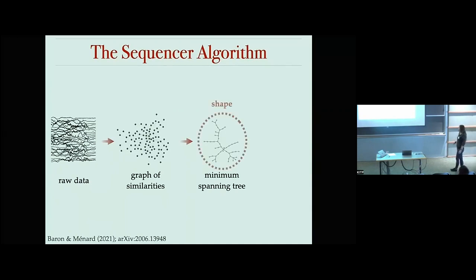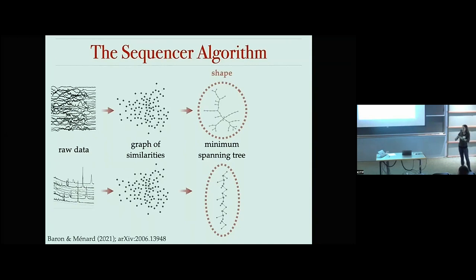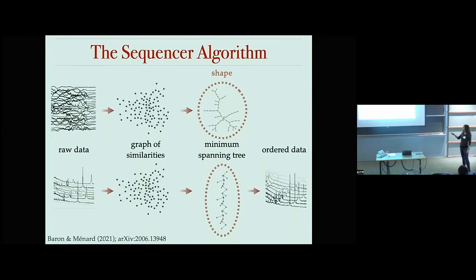What we realized is that the shape of the minimum spanning tree traces valuable information about the topology of the data. If I get a minimum spanning tree that is elongated, it tells me there is a natural axis within my data — objects can be ordered one after another in this narrow structure, which I call a sequence. In that case, I can say I have a sequence in my data and reorder the objects according to their location in this minimum spanning tree.